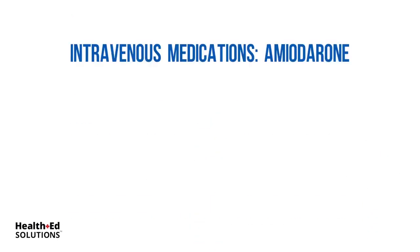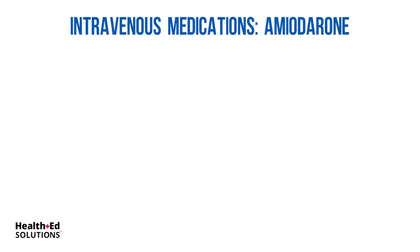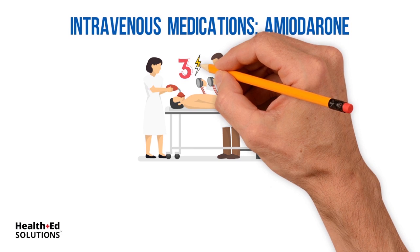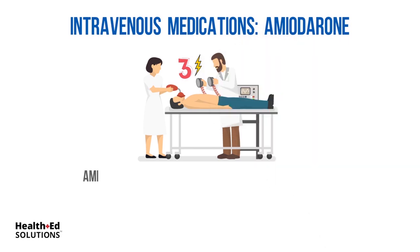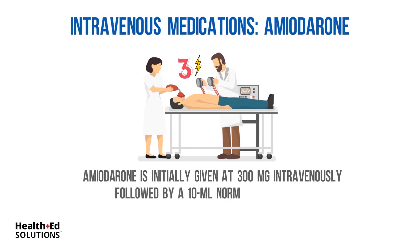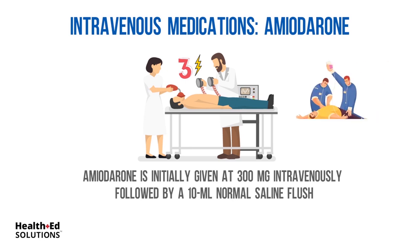Intravenous medications — Amiodarone: If after three shocks have been given the patient remains in a shockable rhythm, amiodarone is initially given at 300 milligrams intravenously, followed by a 10 milliliter normal saline flush. Again, elevate the extremity and continue with chest compressions when giving these drugs to facilitate transport to the central circulation.